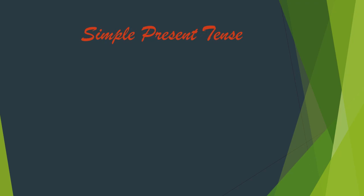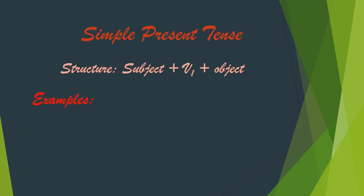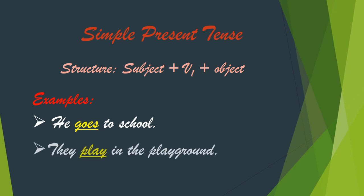Simple present tense structure is: subject plus first form of verb plus object. If the subject is singular, then S or ES is used with the first form of verb, but if the subject is plural, there is no need for such addition to the main verb. Let us understand this structure with two examples: 'He goes to school' and 'They play in the playground.'